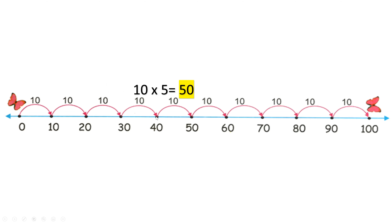Now take your finger and take five hops by yourself until you get to 50. Let's check together — ready? One hop, two hops, three hops, four hops, five hops. So 10 times five equals 50.